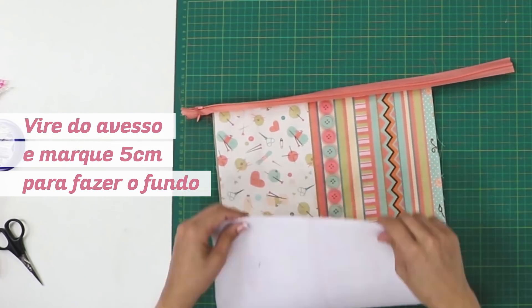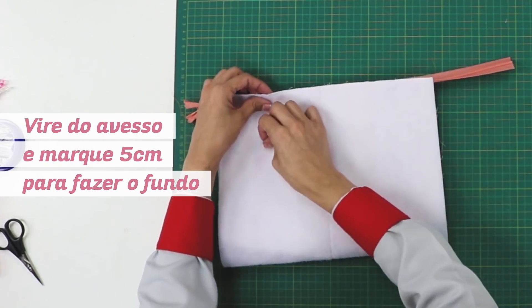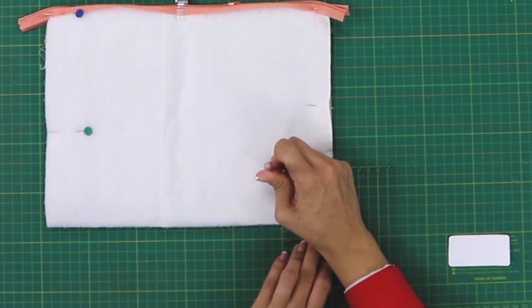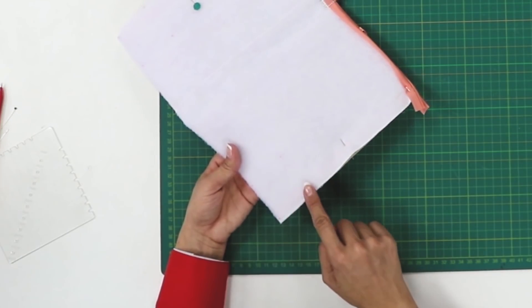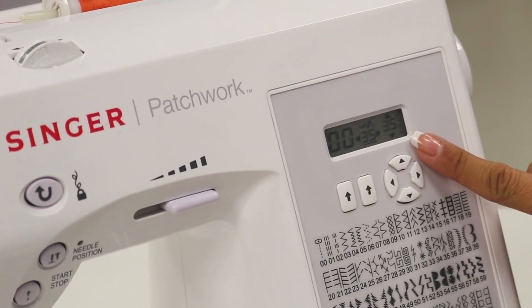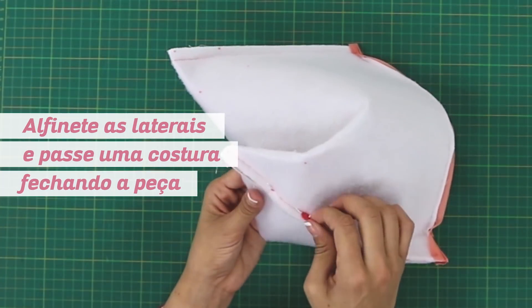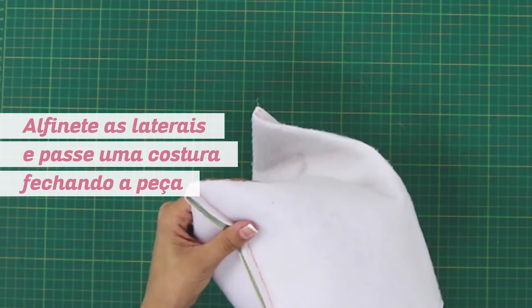Vire do avesso e marque 5 cm para fazer o fundo. Costure nas laterais do tecido. Alfinete as laterais e passe uma costura fechando a peça.